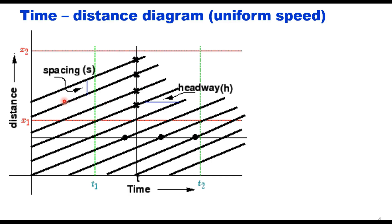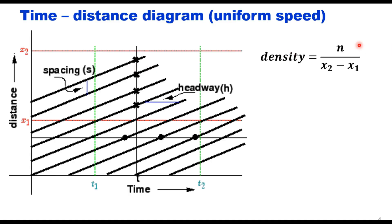If you take the time-distance diagram of multiple vehicles, and all these vehicles are moving at the same speed, the lines will be parallel. The distance between two lines on the time scale is the time headway, and the distance between two lines on the distance axis is the distance headway or spacing between vehicles. The space headway divided by time headway gives you the speed. Density is the number of vehicles per unit length — at any time t, counting vehicles between x1 and x2 gives n=4, and dividing by (x2−x1) gives density.